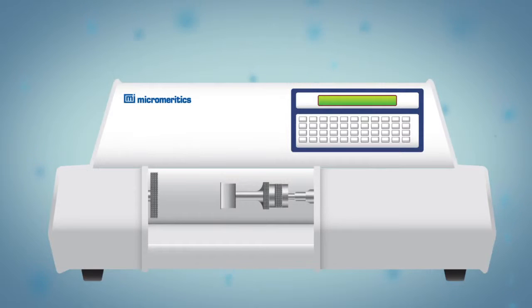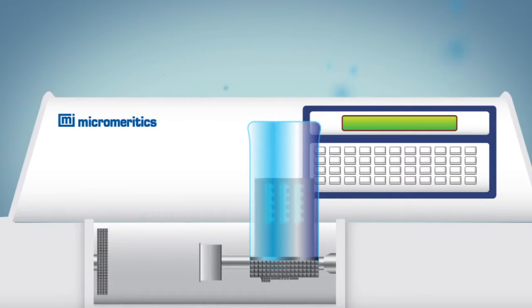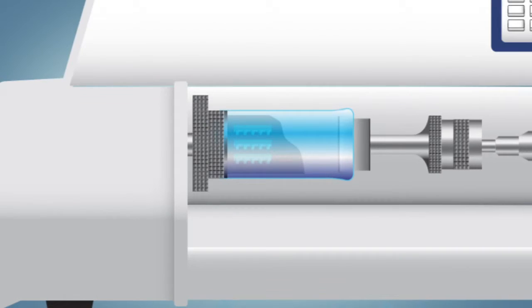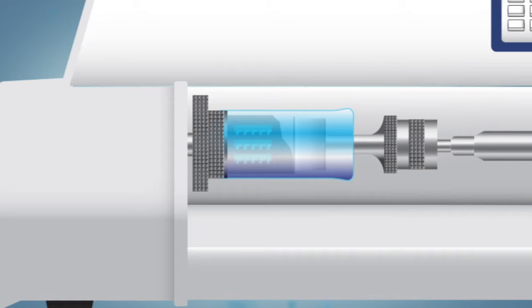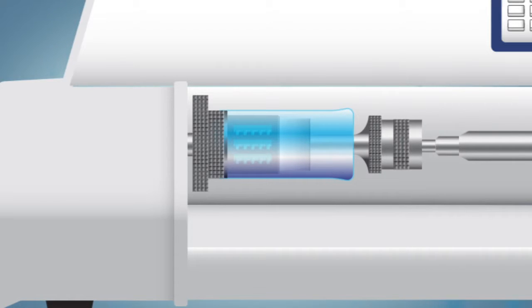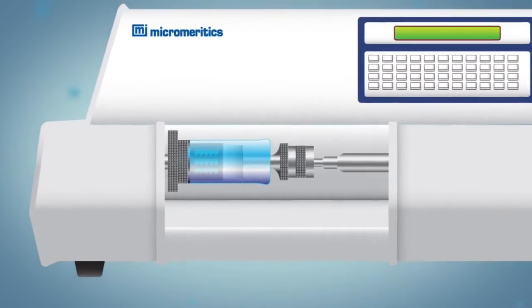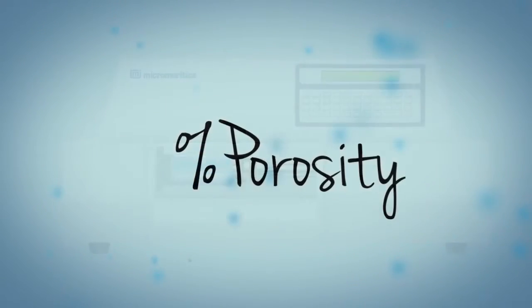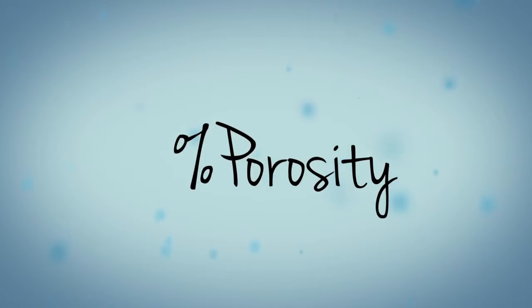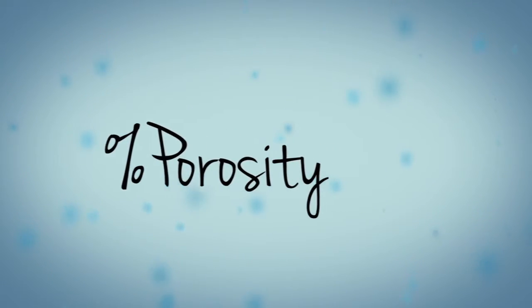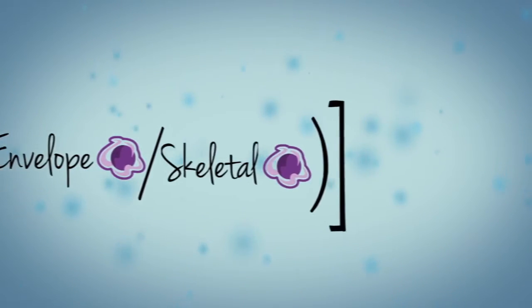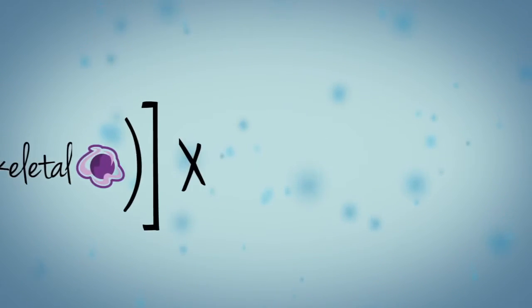The GeoPyc is used to measure envelope density. A ribbon is placed into a quasi-fluid medium that has a high degree of flowability. The ribbon and medium are then gently agitated, compressed, and displacement measurements are taken. When skeletal density measurements are entered into the GeoPyc, along with sample mass, the percent porosity of the ribbon is then calculated. Percent porosity equals 1 minus envelope density over skeletal density multiplied by 100.